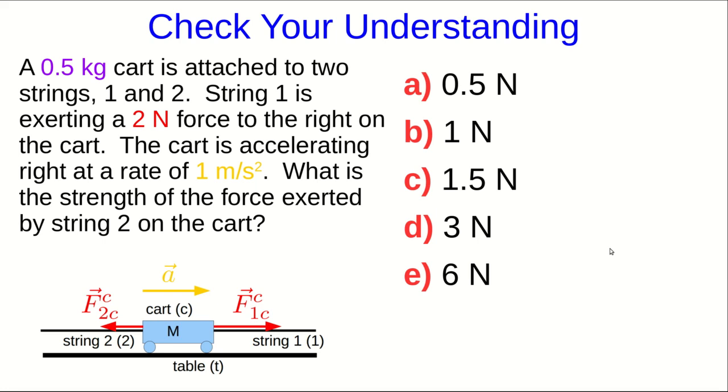Here is the question that I ended the first part of the lecture with, and a common mistake that someone might make here is just to say, oh, F equals MA, 0.5 kilograms times one meter per second squared, 0.5 newtons.